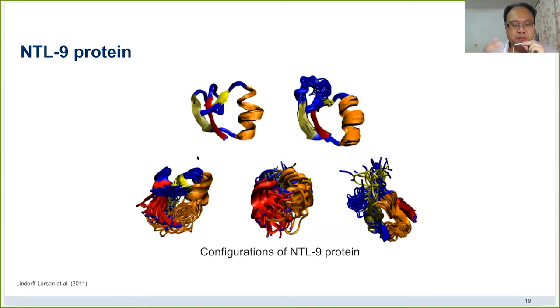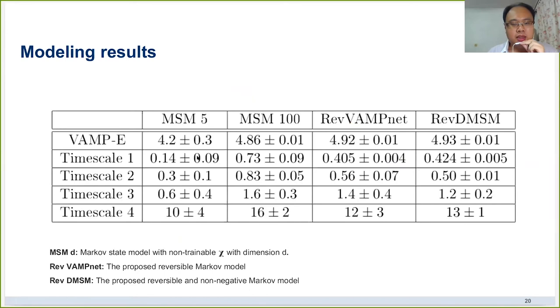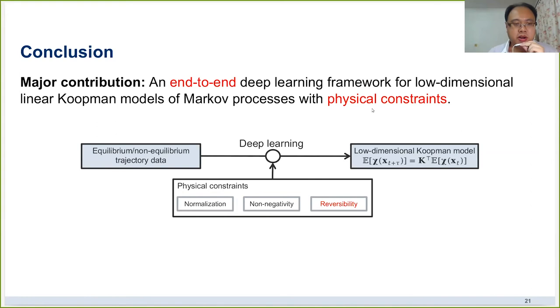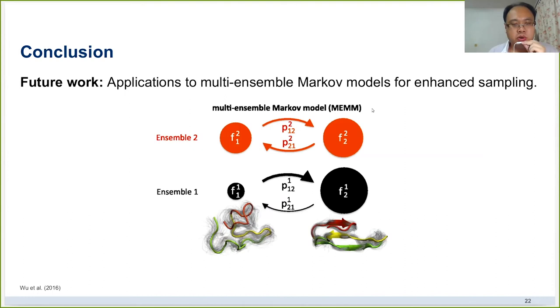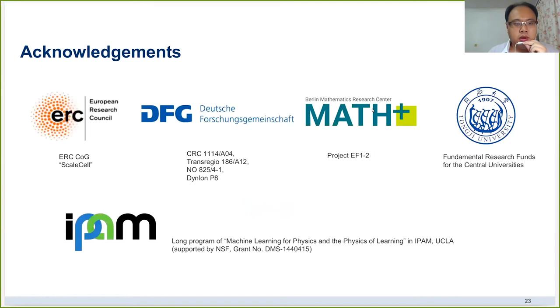We also apply our method to a very big system, the molecular simulation of the NTL9 protein. Because we have known that there are five standard conformations of this system, and our method with only five observables can well approximate such a system, and the accuracy is close to the Markov state model with 100 observables. So now we can go to our conclusion. I think the major contribution of this paper is that we proposed one end-to-end deep learning framework for low-dimensional linear Koopman models. And we show that the physical constraints can help us to improve the approximate accuracy significantly. In the next step, we will try to apply our method to analyze constant sampling data. Finally, I would like to thank all the fundings, and especially the IPAM program at UCLA, because a part of this research was performed in this program.